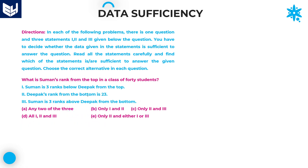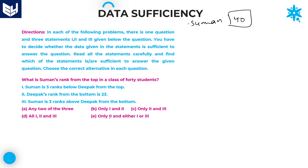Next one — the last question in this data sufficiency topic. What is Suman's rank from top in a class of 40 students? Total 40 students are there in the class. We need to find Suman's rank. The options are: only 1 and 2, only 2 and 3, only 2, and either 1 or 3. We will check each combination.